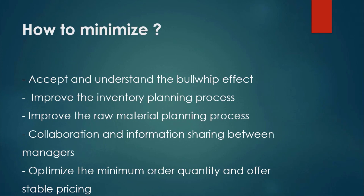Fifth, optimize the minimum order quantity and offer stable pricing. Certain products have high minimum order quantities for end customers, resulting in large gaps between subsequent orders. Lowering the minimum order quantity to an optimum level will help create smoother order patterns. Stable pricing throughout the year instead of frequent promotional offers and discounts may also create stable and predictable demand, helping to minimize the Bullwhip Effect.